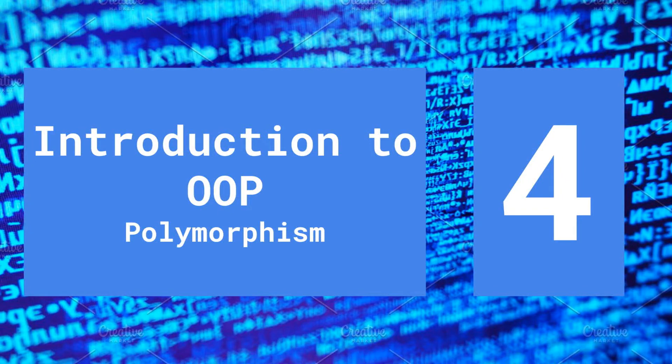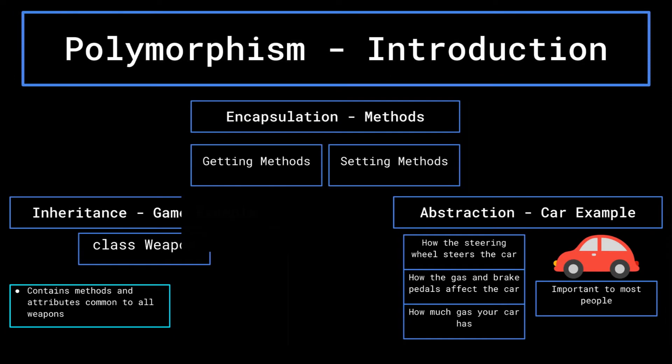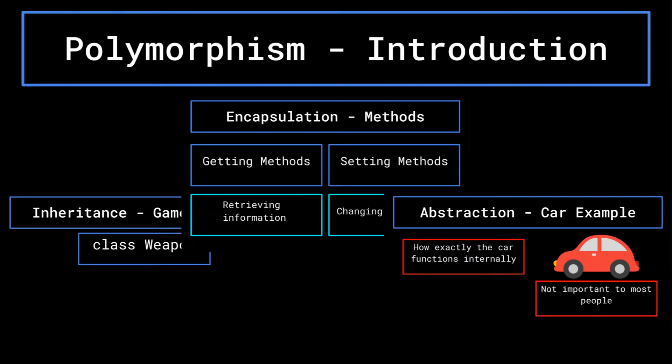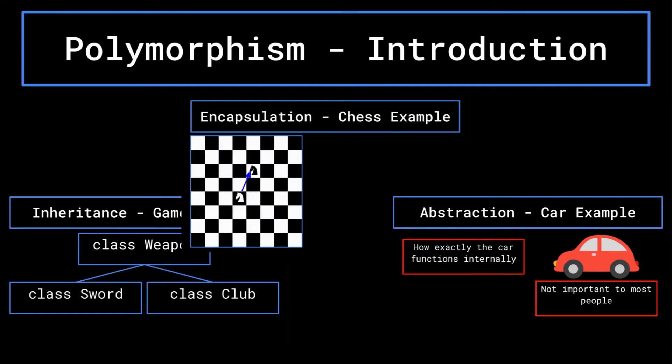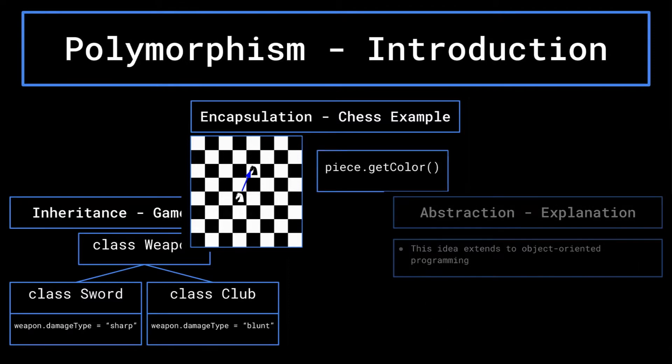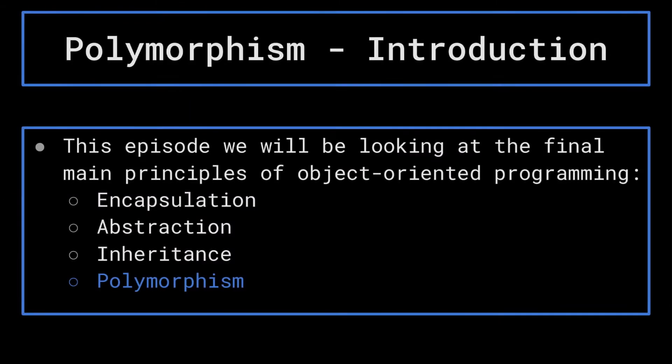Welcome back to our series on Introduction to Object-Oriented Programming. So far, we've covered three of the four main principles, so be sure to check out the link in the description for the rest of the series if you need to catch up. This episode, we will be covering the final of the four main principles, polymorphism. So without further ado, let's get into it.